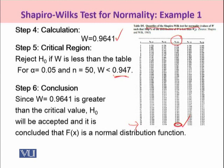If you remember, we have designed the critical region in a way that we will reject H naught if W computed is less than our tabulated value. So for alpha equal to 0.05, you will reject your hypothesis if your W computed value would be less than your tabulated value 0.947. Since our W calculated for the sample data is 0.9641, it is not less than the critical value, rather it is greater than that. So H naught will be accepted, and we can conclude that F(x) is the normal distribution function.